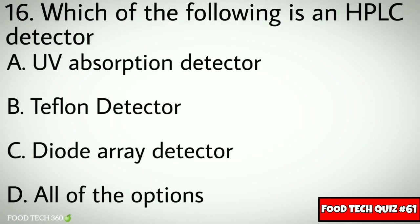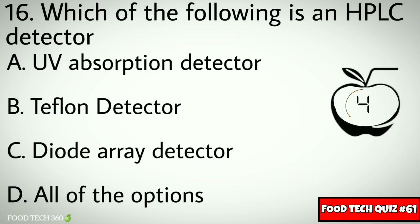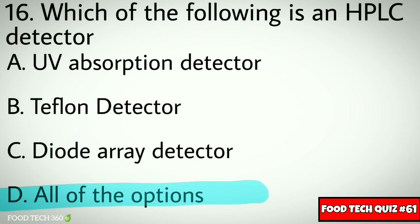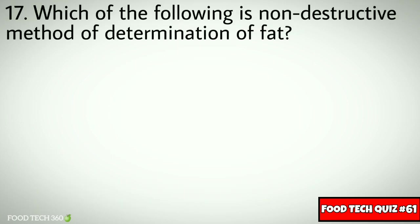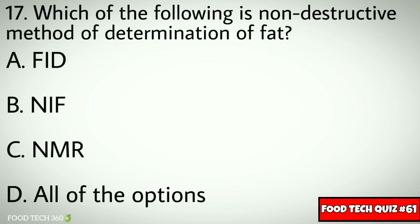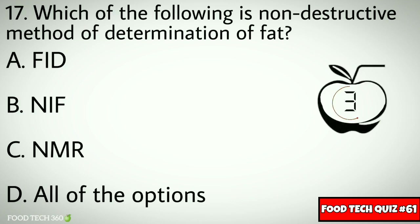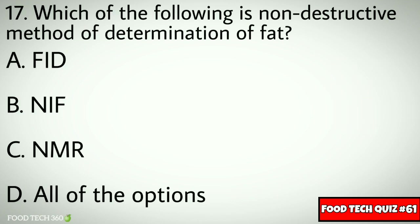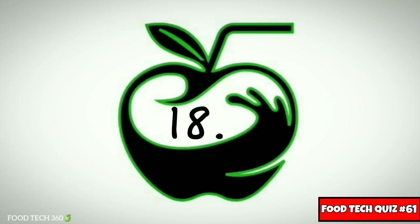Options: a) UV absorption detector, b) Teflon detector, c) diode array detector, d) all of the options. Correct answer: d) all of the options. Question number seventeen: which of the following is a non-destructive method of determination of fat? Options: a) FID, b) NIR, c) NMR, d) all of the options. Correct answer: c) NMR.